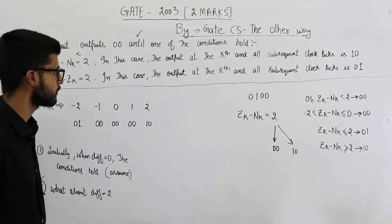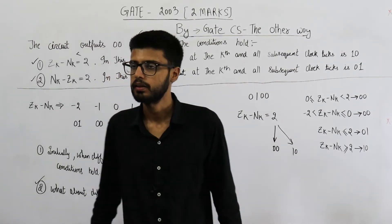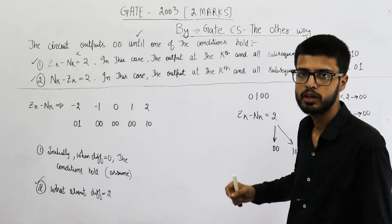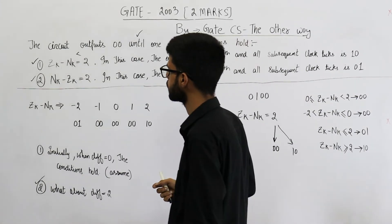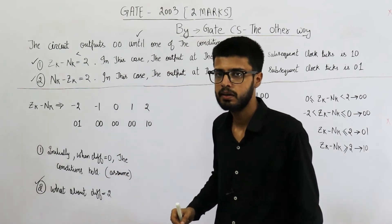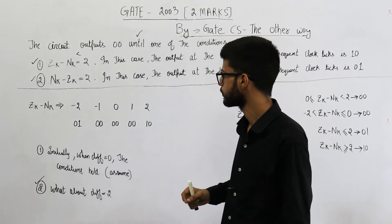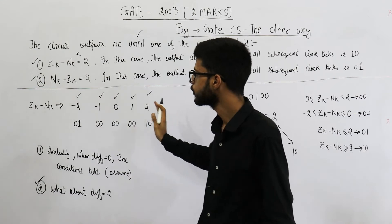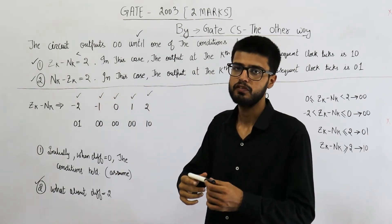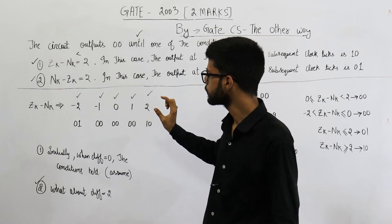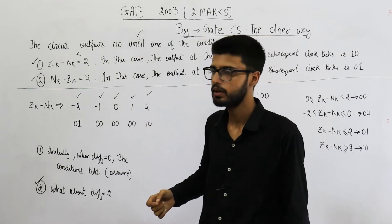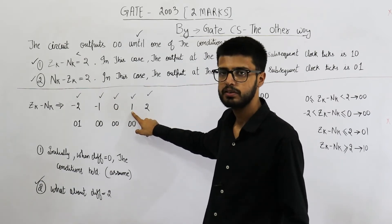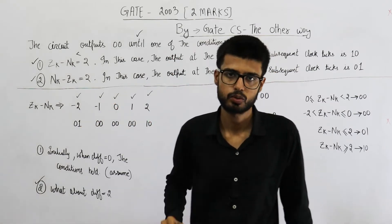Now let us solve this question. For drawing the finite automata or state diagram for such a scenario, we will require 5 states — so the answer is 5. The output is only dependent on the current difference between zeros and ones, and only five values are possible according to the question: minus 2, minus 1, 0, 1, and 2. So 5 possible differences means 5 possible states.